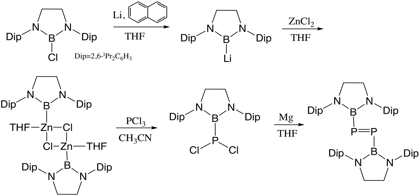Aluminum hydrides such as lithium aluminum hydride (LiAlH₄) can reduce diphosphene to give stable diphosphanes: Ar-P=P-Ar + LiAlH₄ → ArHP-PHAr, where R = 2,4,6-(t-Bu)₃C₆H₂.